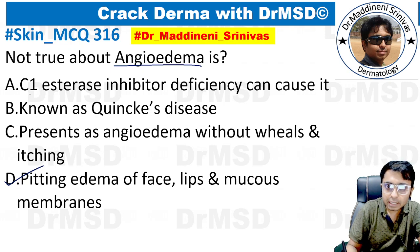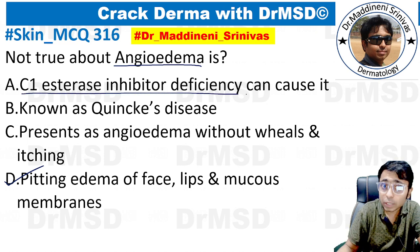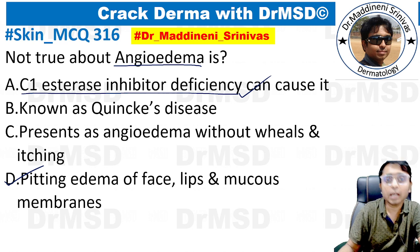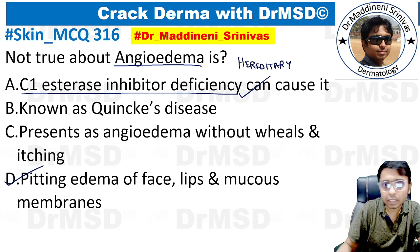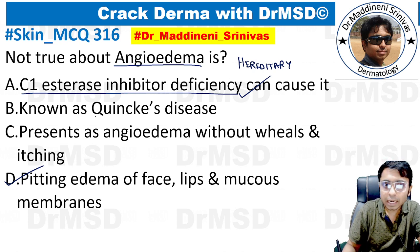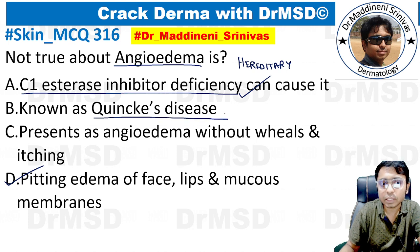Option A says C1 esterase inhibitor deficiency can lead to angioedema — this is an absolutely right statement. There is one form of angioedema called hereditary angioedema in which we can see C1 esterase inhibitor deficiency. And yes, angioedema, or angioneurotic edema, is also known as Quincke's disease — this statement is also right.